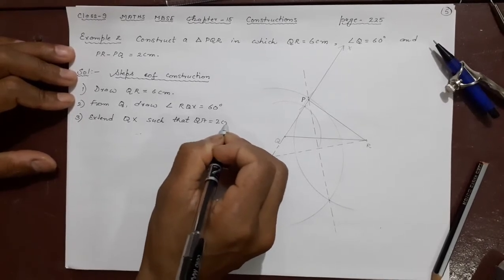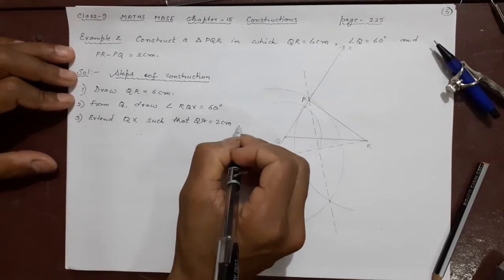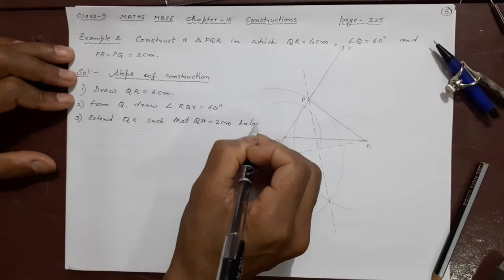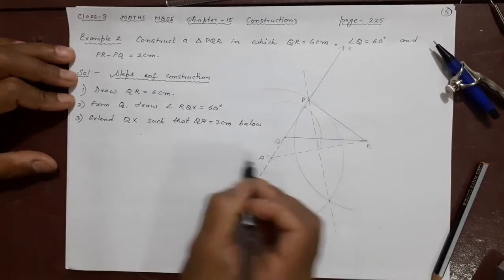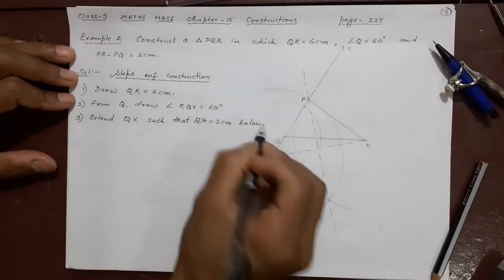If you write this much it is understood. Qx you have extended. Extend Qx such that QA is 2 cm below. This is done. After that number 4 join AR.